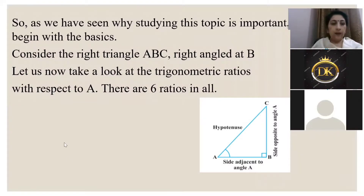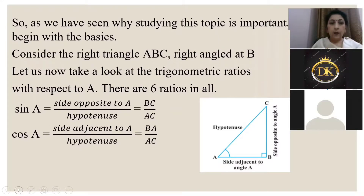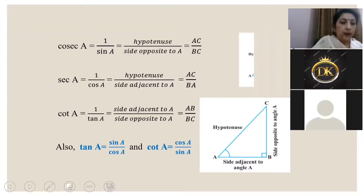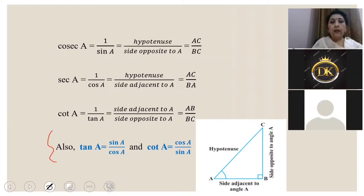After doing these three main ratios, I told you that using these three we can find out the other three also, because the reciprocal of sine is cosec. The reciprocal of cos is sec. And cot is the reciprocal of tan. These are the six ratios — what they are, what they mean, and the relationship between sine, cos, tan, cot, sec, and cosec.